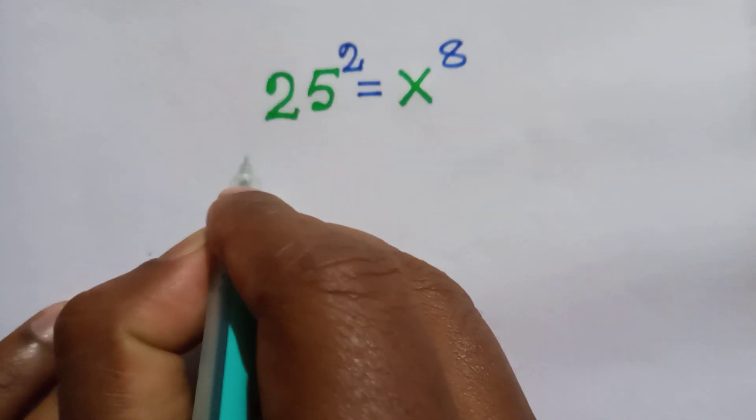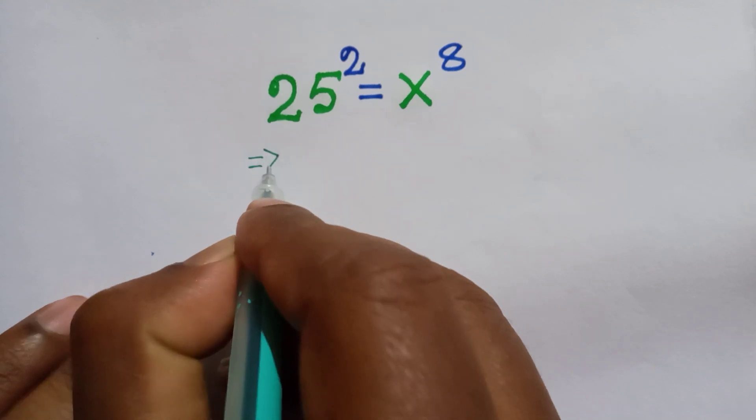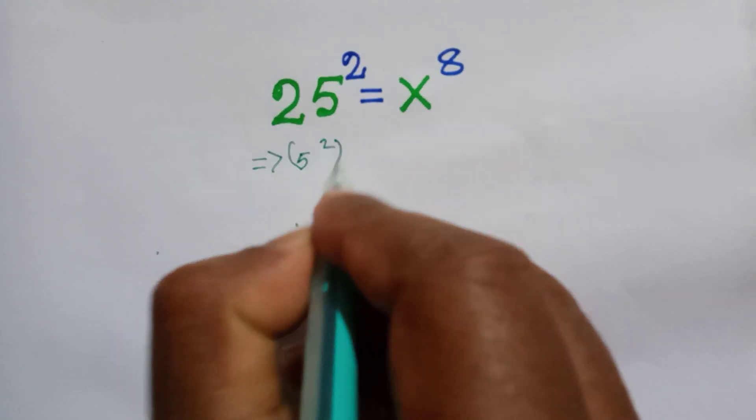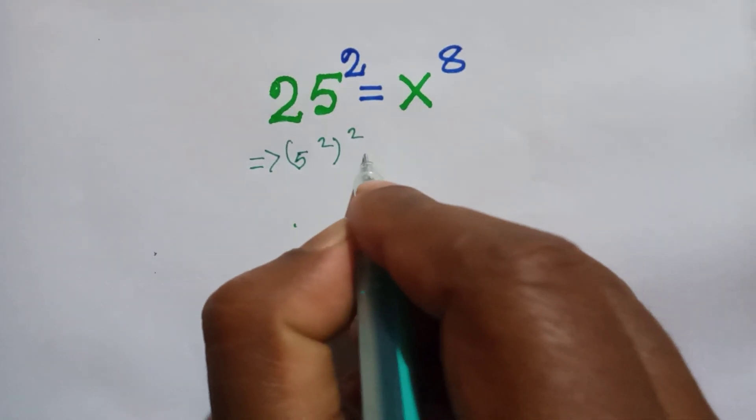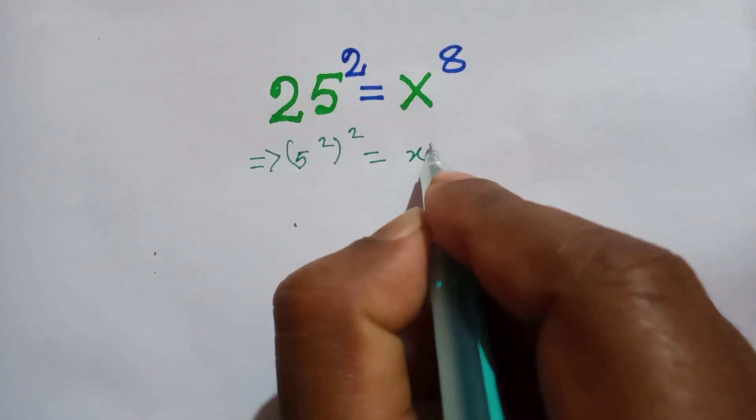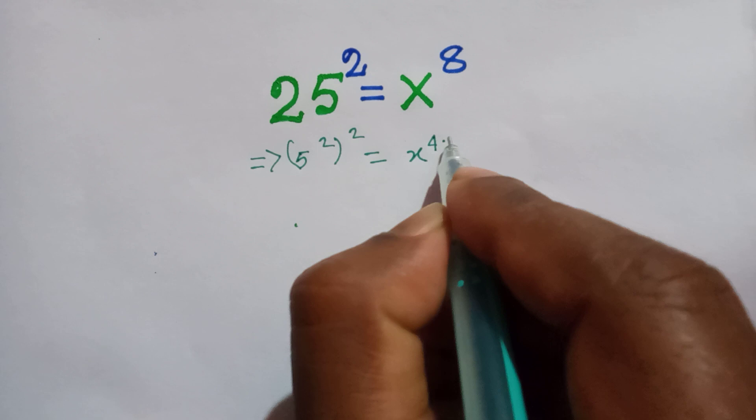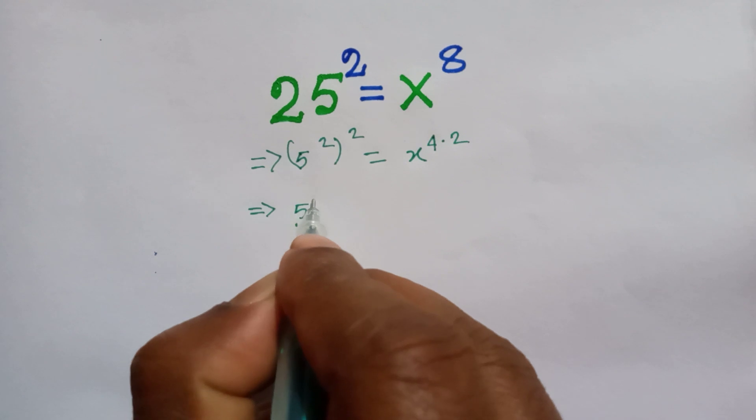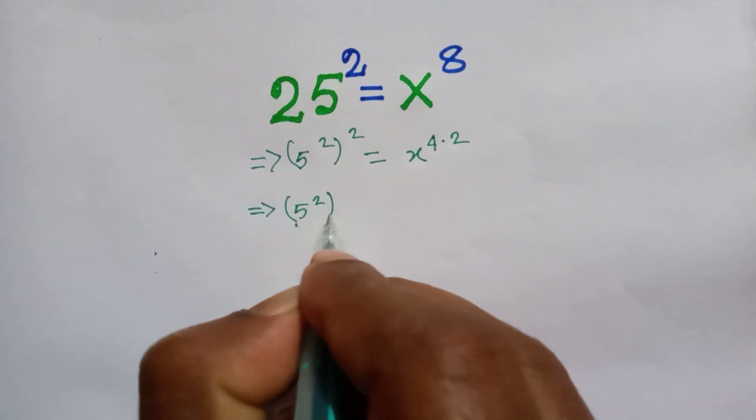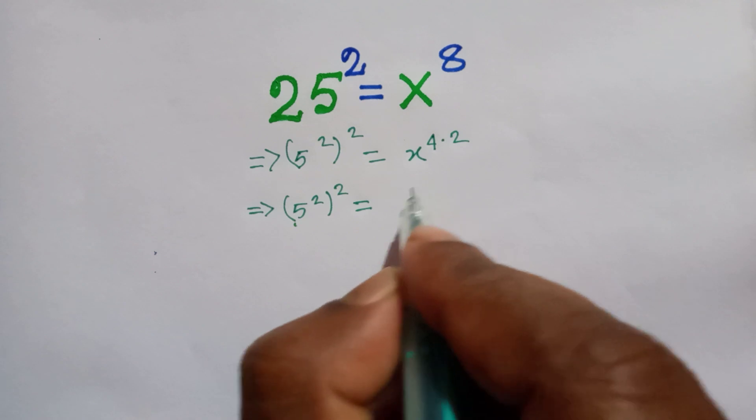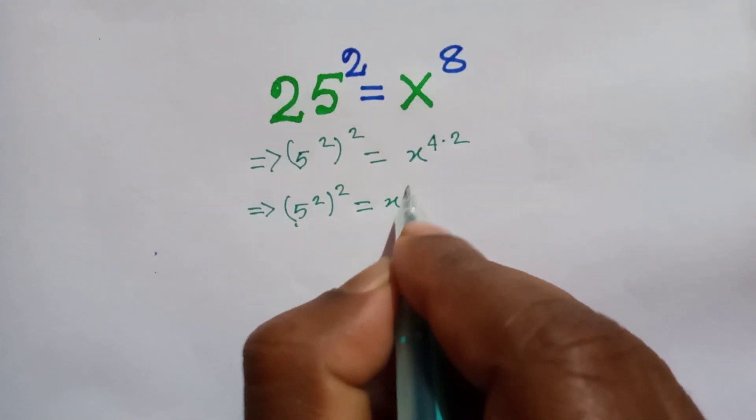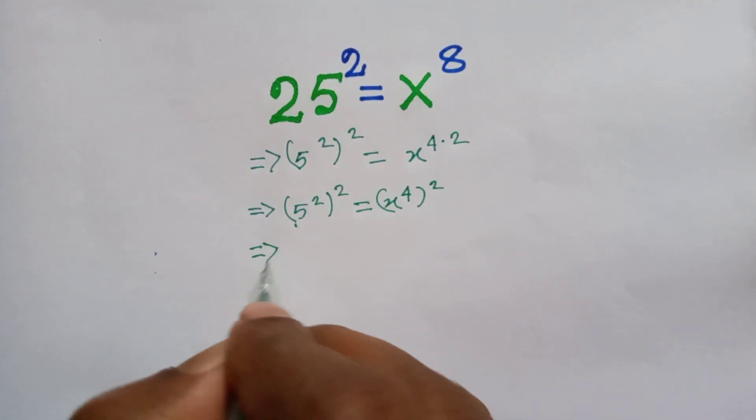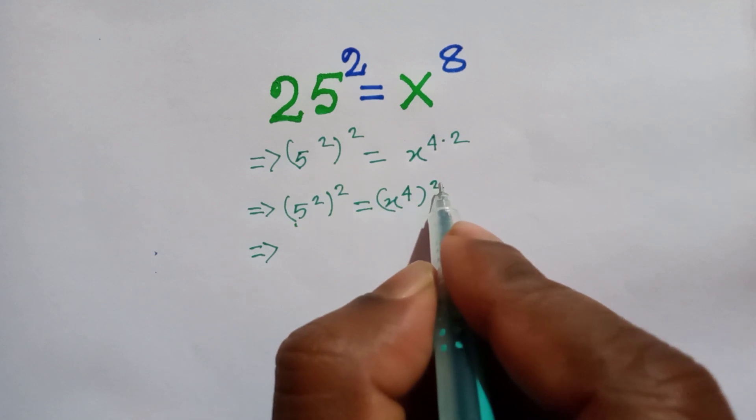Here, 5 square whole square is equal to x to the power 4 times 2, or 5 square whole square is equal to x to the power 4 whole square. This square and this square is same, so we can take it out.